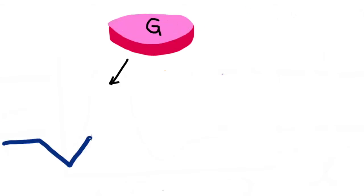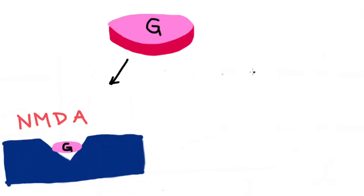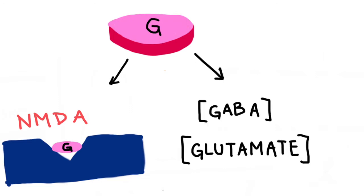Gabapentin also has other mechanisms, such as the inhibition of the NMDA receptor, and the increase of GABA and glutamate concentrations. Both of these also contribute to the effect of decreased neuronal firing.